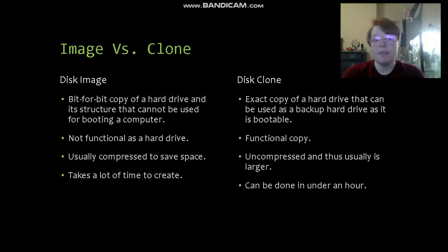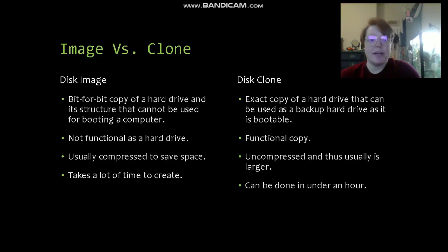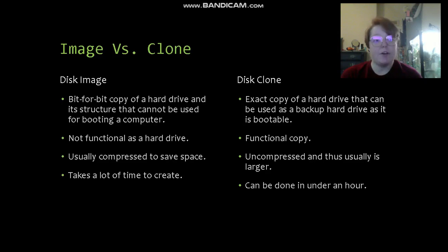A disk image also takes a lot of time to create — this bit-for-bit stream can take hours and hours. This is completely different from a disk clone. A disk clone is similar in that it's an exact copy of a hard drive, but it can be used as a backup hard drive because it is bootable. Whatever the clone is copied onto has the same structure as what is being copied, so it is a functional copy. Because it is functional, it is usually uncompressed and can be larger than a disk image, but it can be done in under an hour — very quickly compared to a disk image.